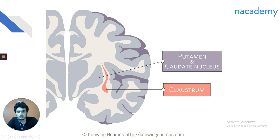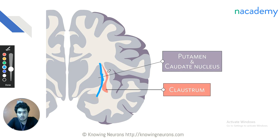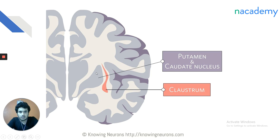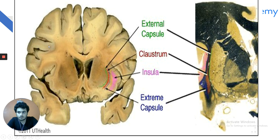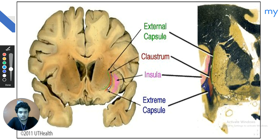A cadaveric image beautifully demonstrates the claustrum marked in red. Just medial to the claustrum is the external capsule; lateral to the claustrum is the extreme capsule; and marked in pink is the insula, the most lateral structure. Medial to the claustrum, the gray matter area is the putamen nucleus.